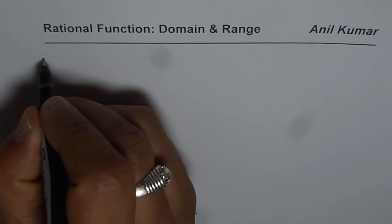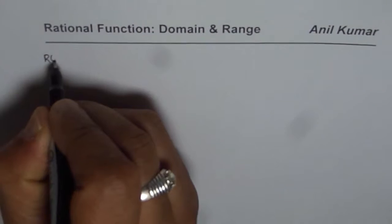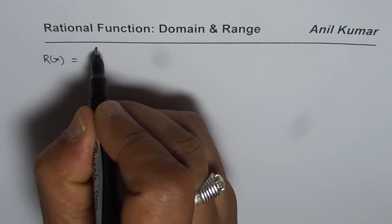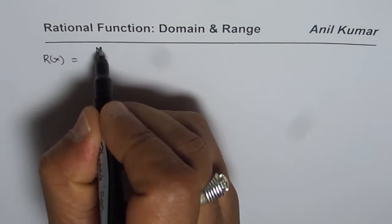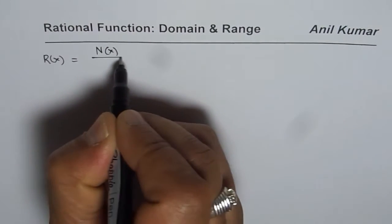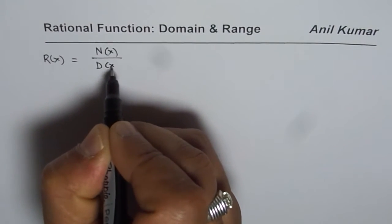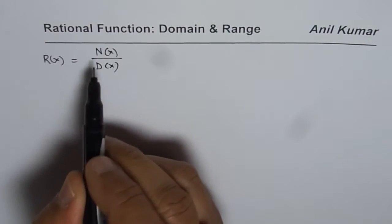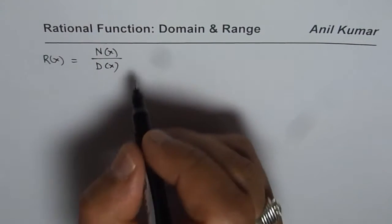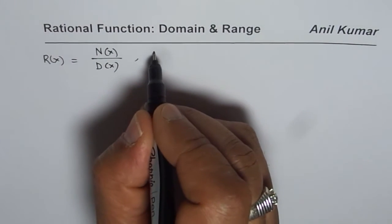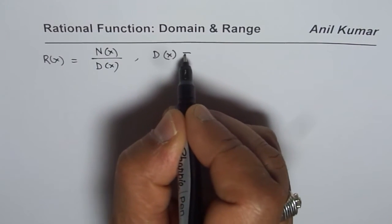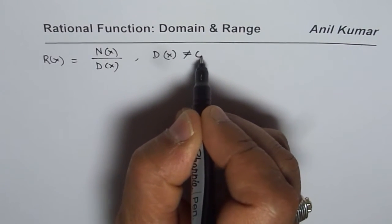A rational function can be written as a ratio of two polynomial functions: polynomial n(x) divided by polynomial d(x), where n is the numerator, d is the denominator, and the restriction is that the denominator cannot equal 0.